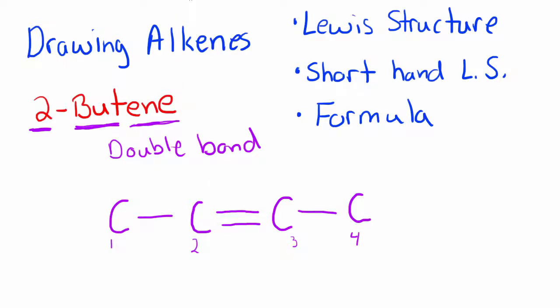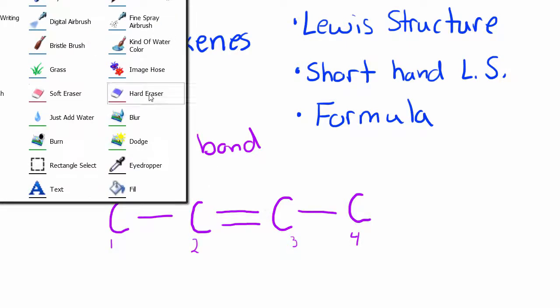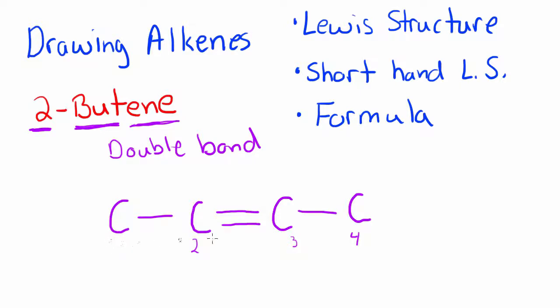Okay so I can erase these numbers now that I've been using and the next thing we need to do, same as what we did with the alkanes, we need to fill in all of the hydrogens. And remember what we want to do is make sure that all of the carbons have four bonds. Because remember carbon always has four bonds. So we'll count how many bonds it already has and then fill it in with hydrogens.